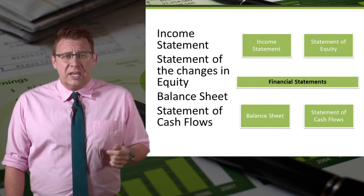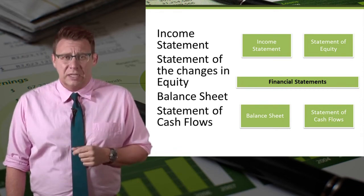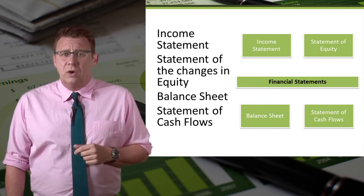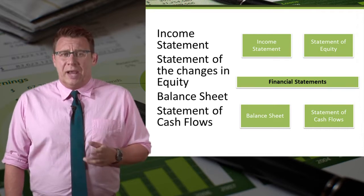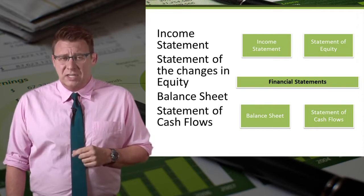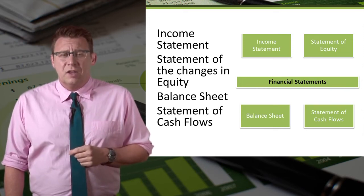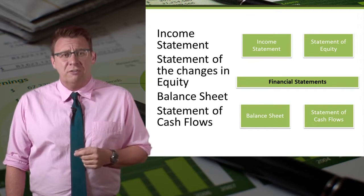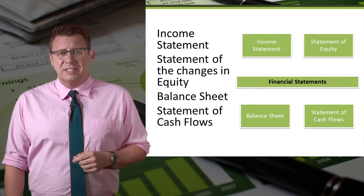An income statement reports a business's profitability. A statement of the change of equity reports the changes in the owner's equity. A balance sheet details the economic resources of a business and the claims on those resources. Finally, a statement of cash flows summarizes the cash inflows and outflows for various business activities.